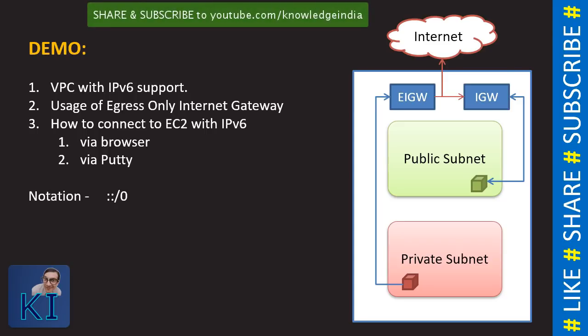After that, we will go ahead and create a public subnet and private subnet. I am going to just operate in one availability zone because I am not pressing on high availability in this particular demo. The idea is to explain the networking concept. We will make use of an internet gateway, our normal traditional internet gateway, and we will also make use of an egress-only internet gateway. We will make one subnet public and another one private. Then we will create one instance in the public subnet and another instance in the private subnet. We will ensure that both instances have IPv6 as well.